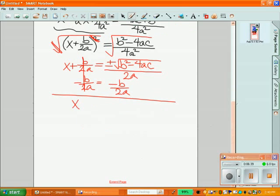And on the left side, I have my x all alone equals. And now of course those are not like terms, so I'm going to write them separate. Negative b over 2a plus or minus the square root of b squared minus 4ac over 2a.